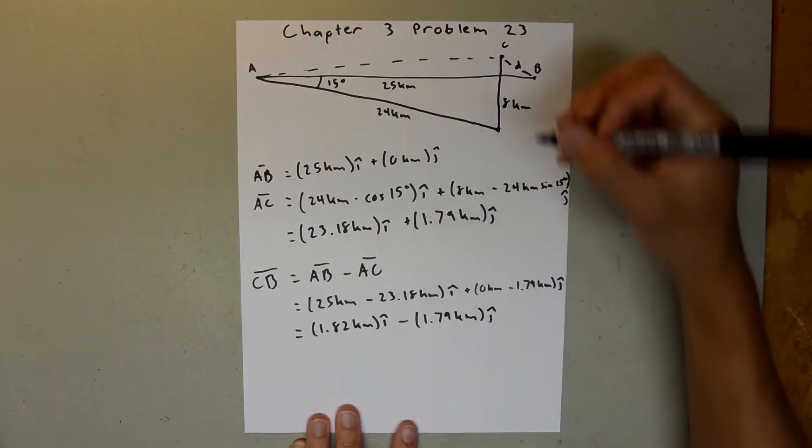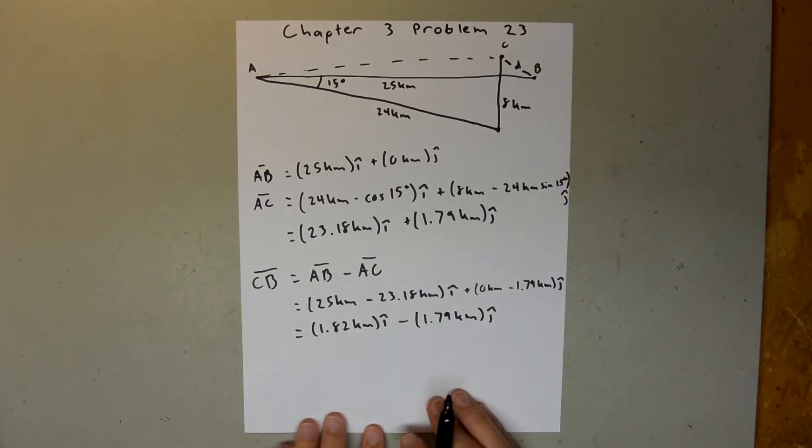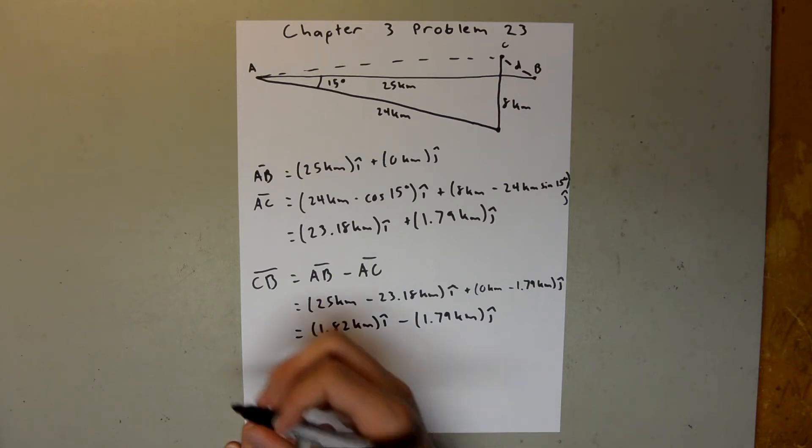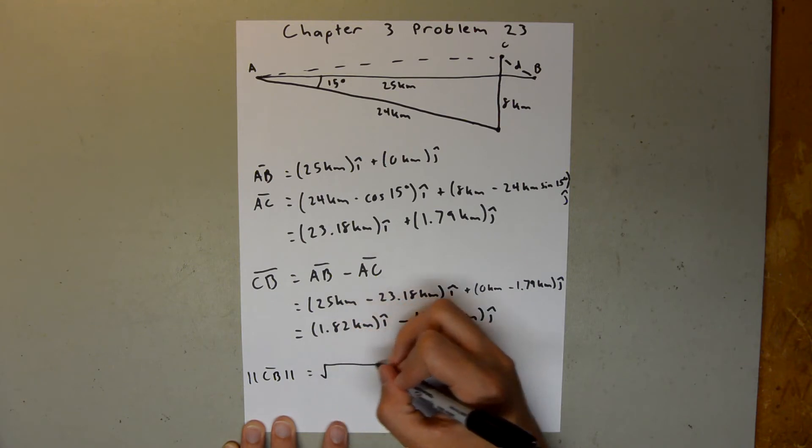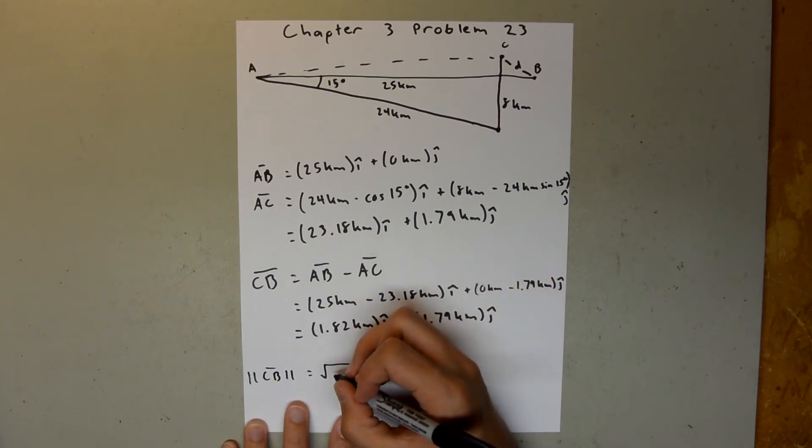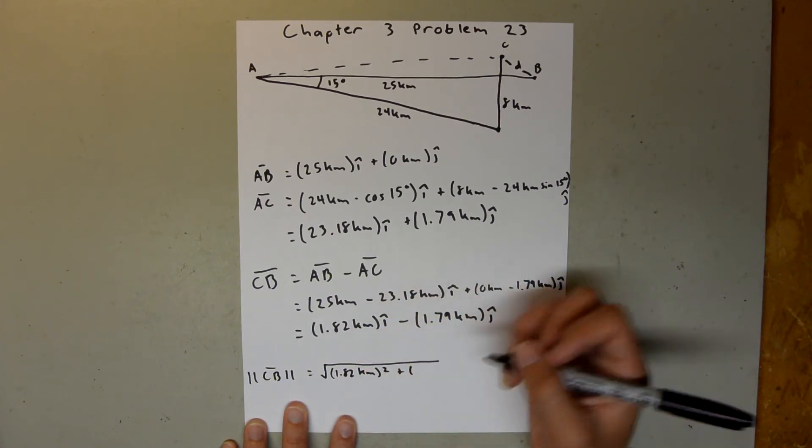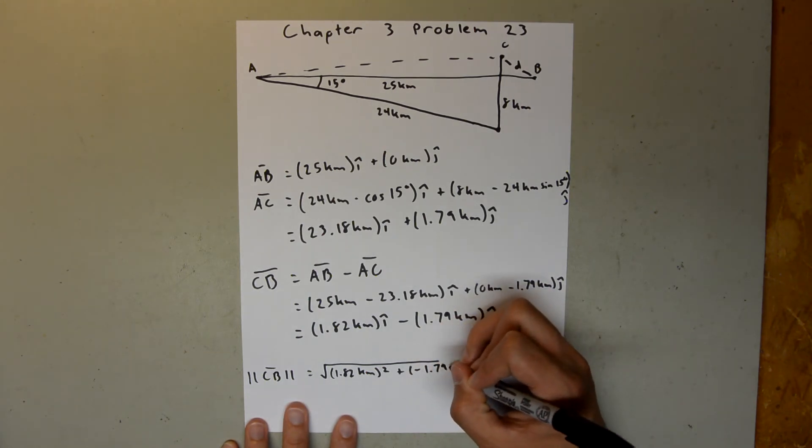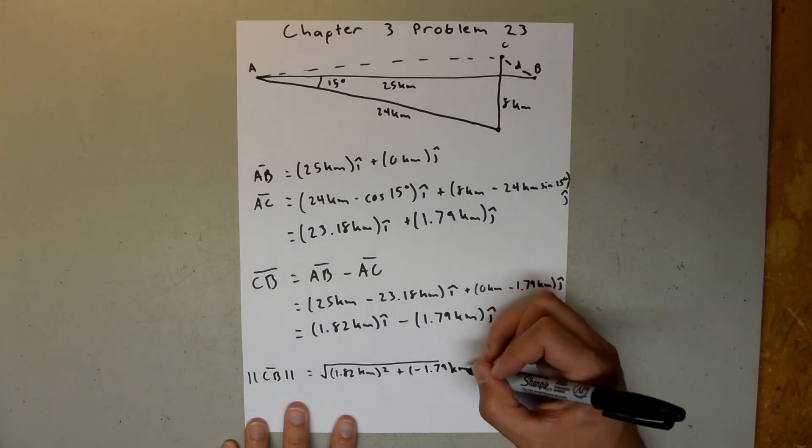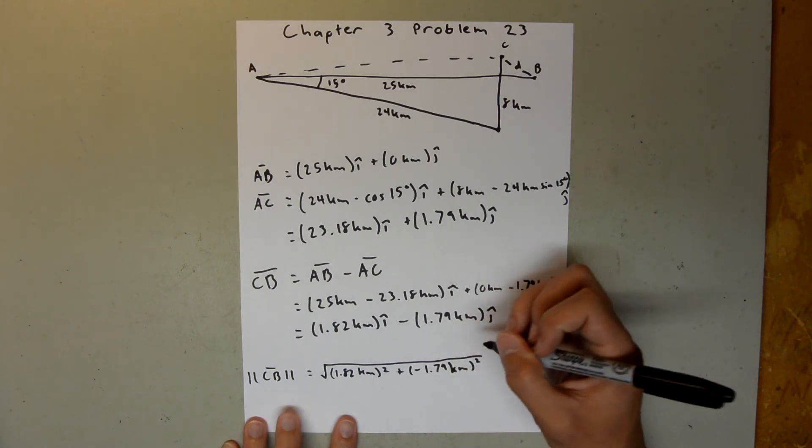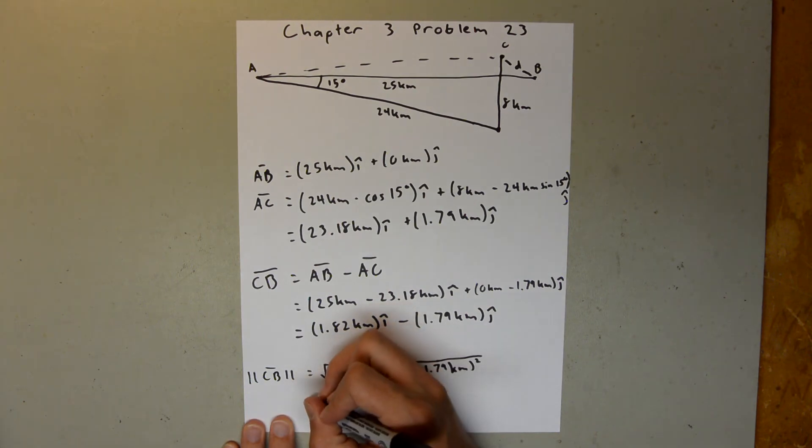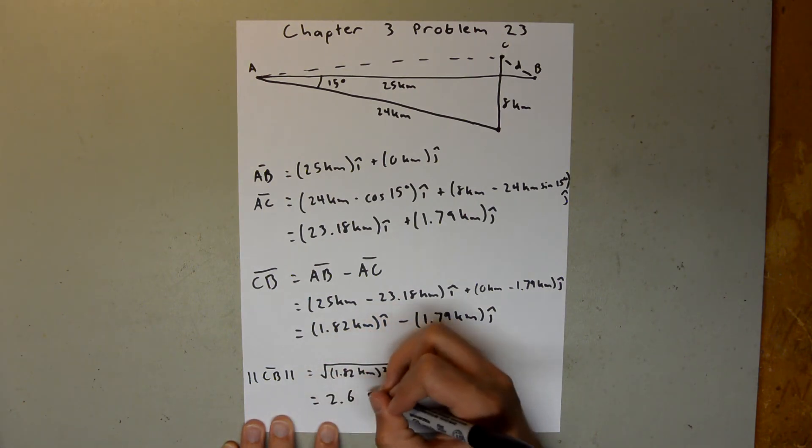And so now, this is our vector from C to B, and now to find that distance, all we have to do is take the magnitude of the vector, so the magnitude of vector CB is equal to the square root of the X component, so 1.82 kilometers squared, plus the Y component squared, negative 1.79 kilometers squared. And when you plug that into your calculator, you should get 2.6 kilometers.